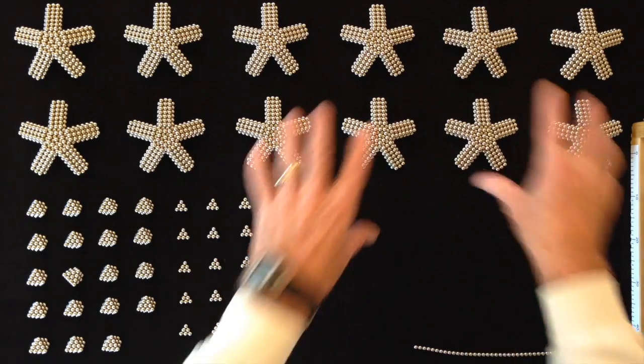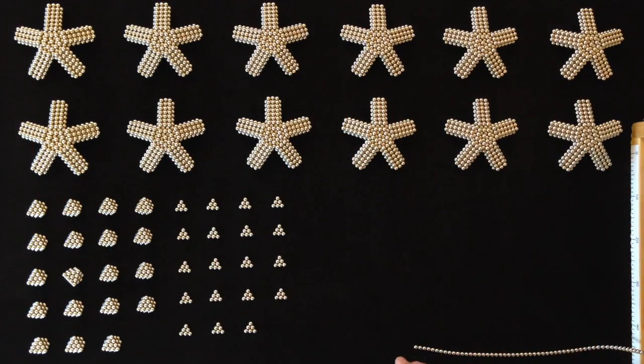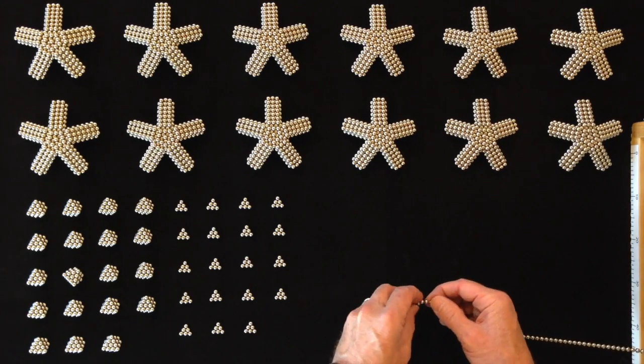Then to connect these starfish together, these 12 starfish, we're going to need these vertices. We need 20 in all. I've built 19 of them, so let me now build the 20th.